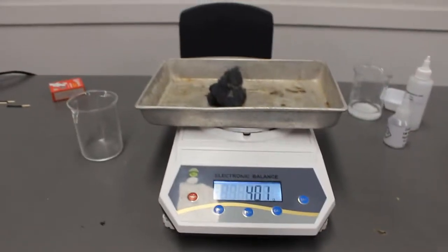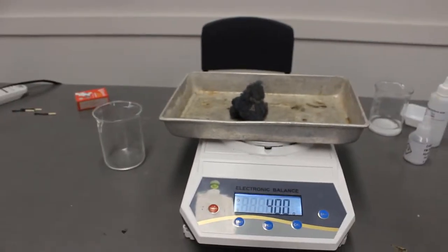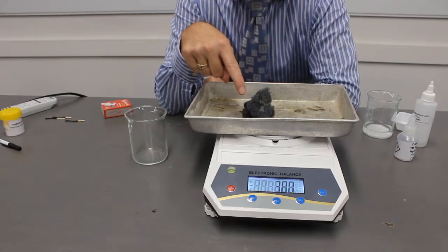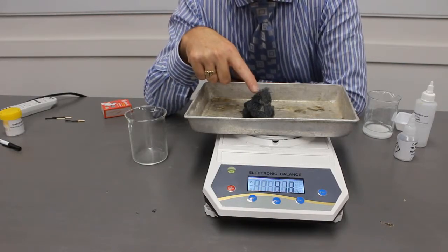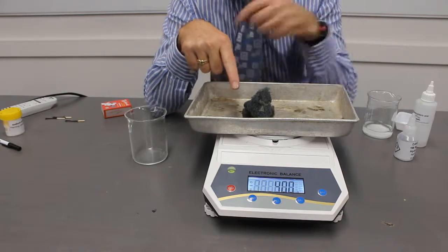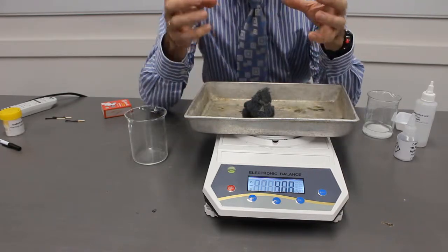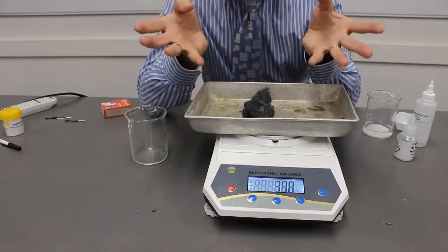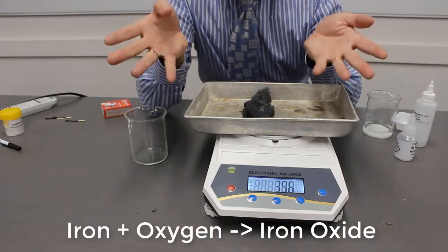So the mass has increased. What on earth is going on there? How has the mass increased? So I mentioned this blue color. This blue color is now called iron oxide. So what's happened is that oxygen has bound to the iron. And that's what the new product is.